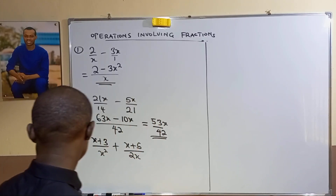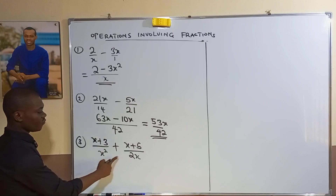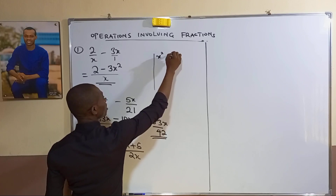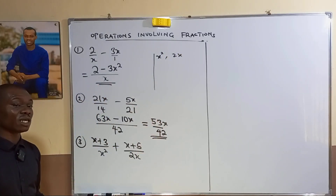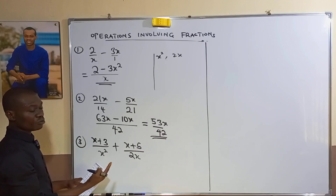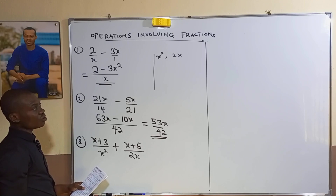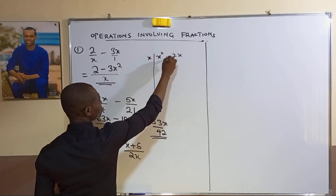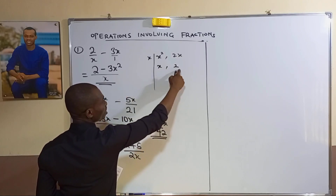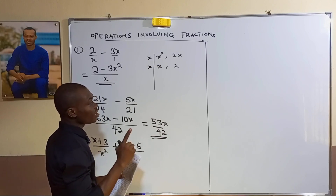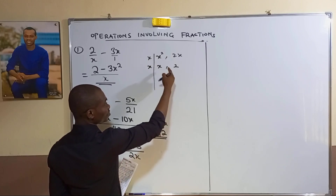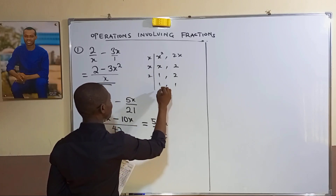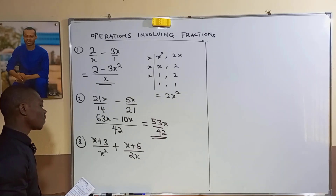Example three: we need the LCM of x² and 2x. The approach is to multiply the two and reduce to the lowest common multiple. Since x is common to both, divide by x: you get x and 2. Nothing else is common, so keep dividing until you reach 1 and 1. That gives LCM = x times x times 2, which is 2x².